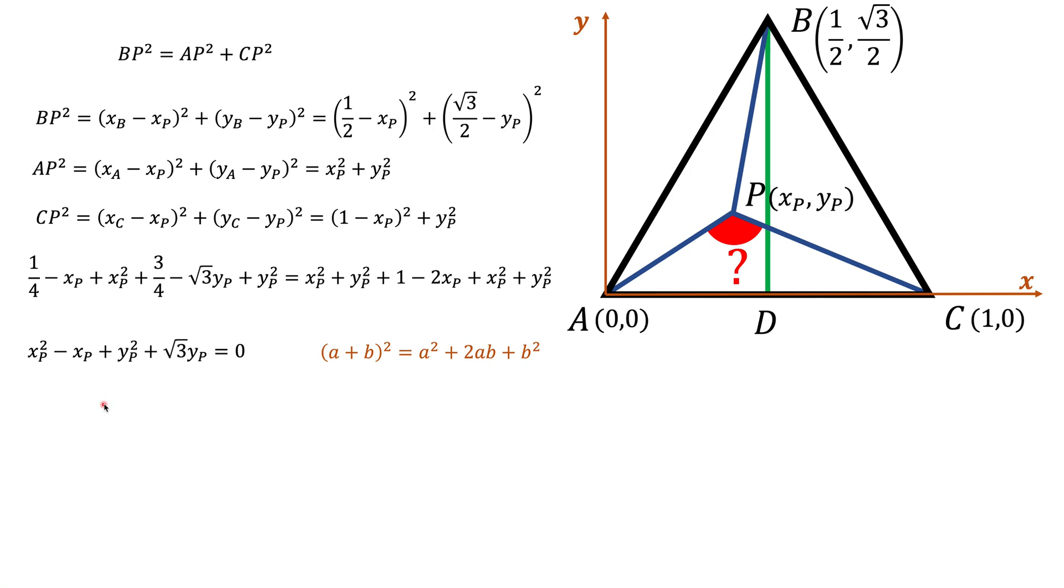And we're going to add this one fourth here, but so we don't change anything, we have to subtract this one fourth as well. When you look at the next two terms, and when you think how you can complete the square, you find yP squared should be a squared, square root of 3 yP should be 2ab. And when you think about it, b squared should be three fourths. And again, once we add three fourths, we should subtract this three fourths.